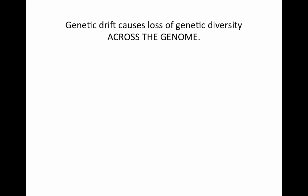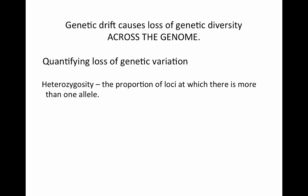Let's contrast the loss of genetic diversity due to genetic drift with that due to natural selection. In natural selection, the loss of allelic diversity is limited to those loci that affect the fitness of organisms. Because genetic drift is completely random with respect to fitness, genetic drift causes the loss of genetic diversity across the entire genome. To measure this overall loss of genetic variation, we can use a quantity called heterozygosity — defined as the proportion of loci in the entire genome at which there is more than one allele in the population.